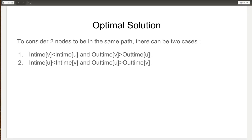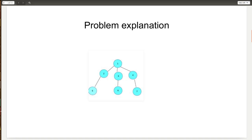Given 2 nodes, how do we find whether one node is the parent of the other? In this graph, we know that 2 is the parent of 5. You can notice that the intime for 2 is smaller than the intime for 5, and at the same time the out time for 2 is greater than the out time of 5. This condition holds true for every single parent-child relationship: if the intime of one node is smaller than the other and its out time is greater than the other, that means the first node is the parent.